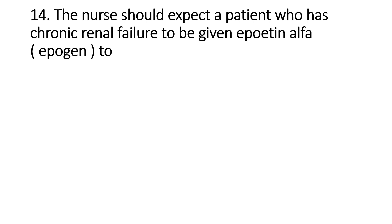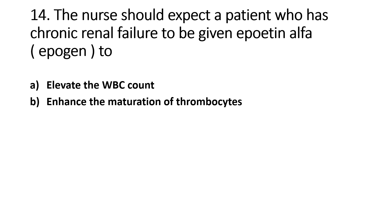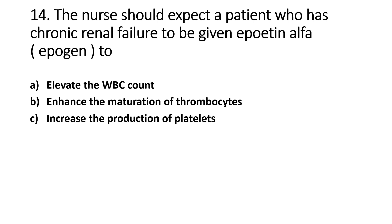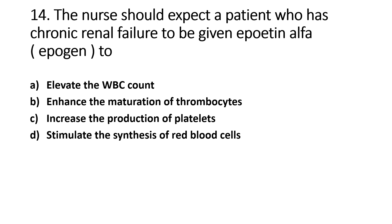The nurse should expect a patient with chronic renal failure to be given Epoetin Alpha (Epogen) to: Option A - Elevate WBC count, Option B - Enhance maturation of thrombocytes, Option C - Increase production of platelets, Option D - Stimulate the synthesis of red blood cells. The right answer is Option D. The kidney produces erythropoietin, which stimulates RBC production; in renal failure, erythropoietin production decreases, so synthetic Epoetin Alpha is given.